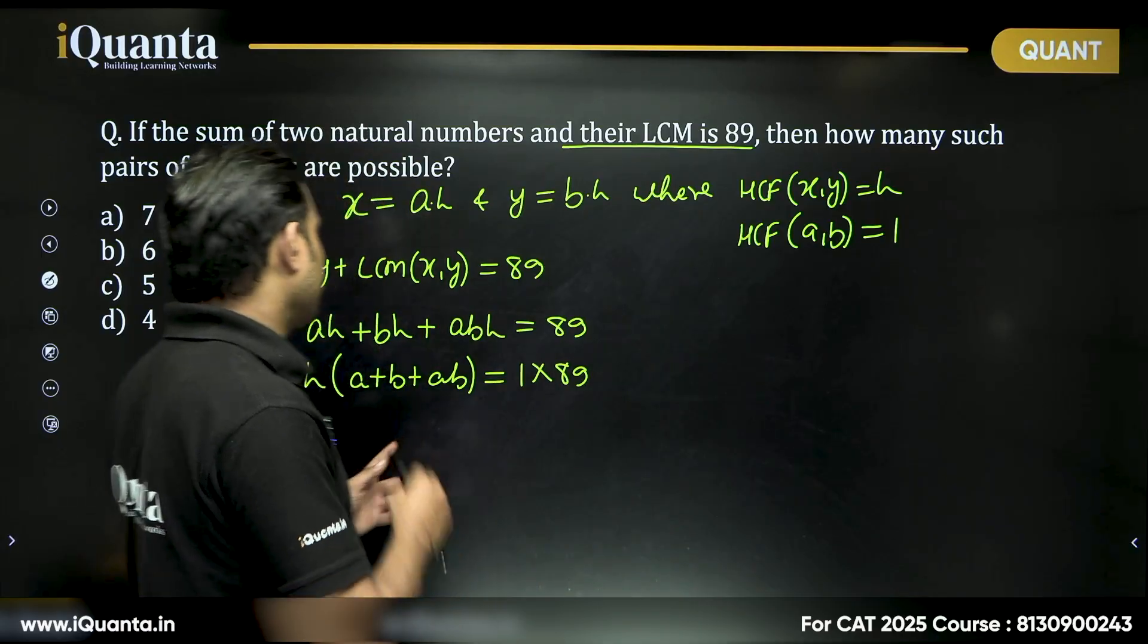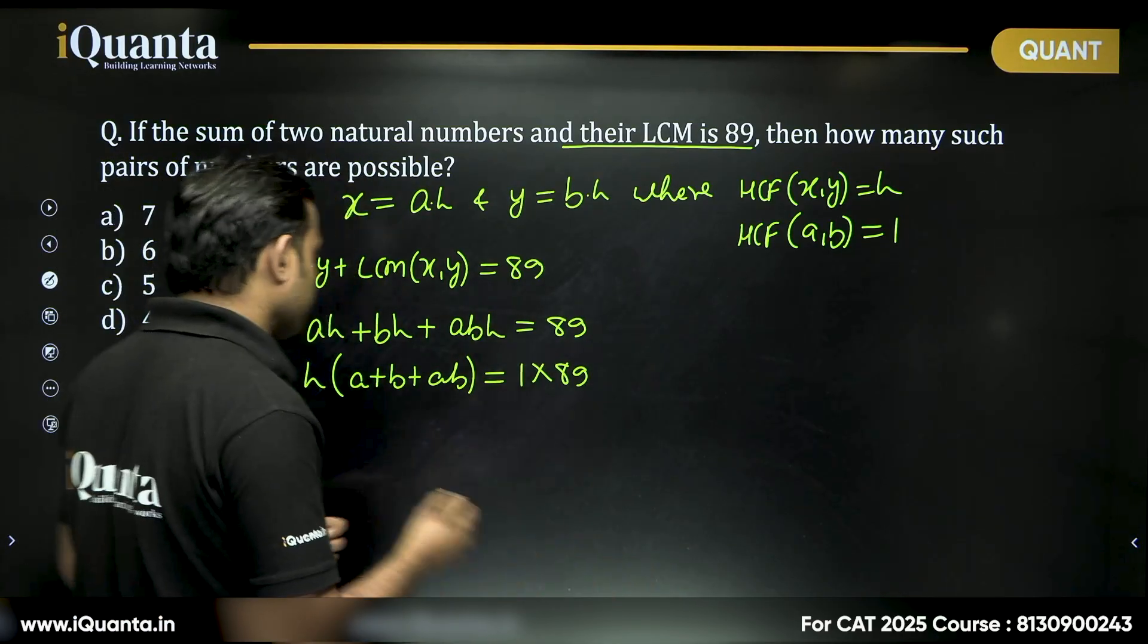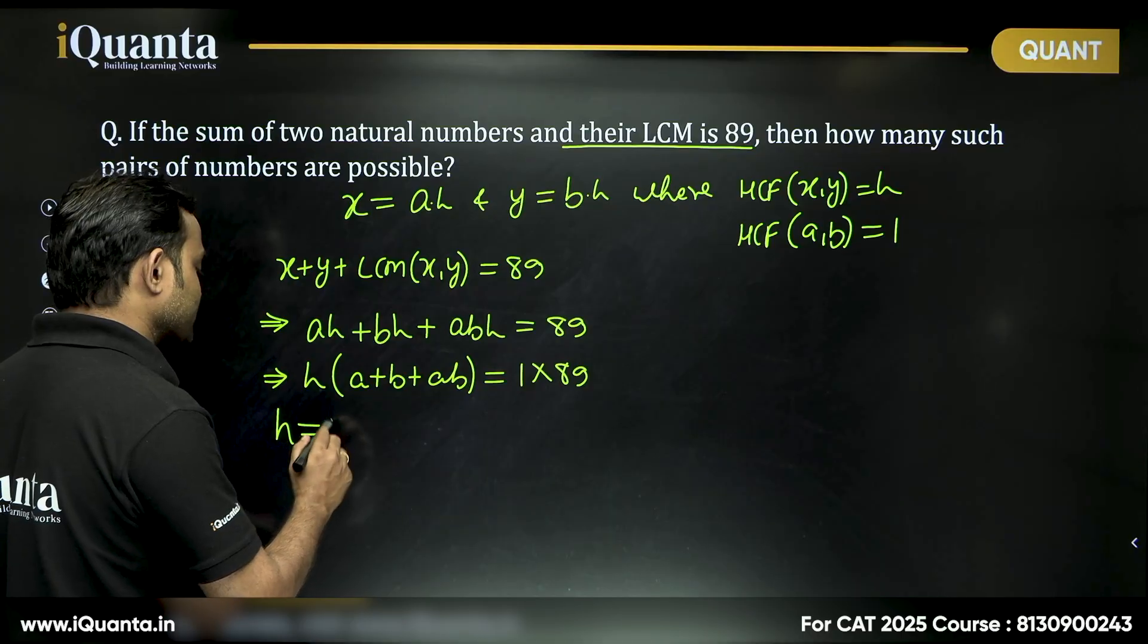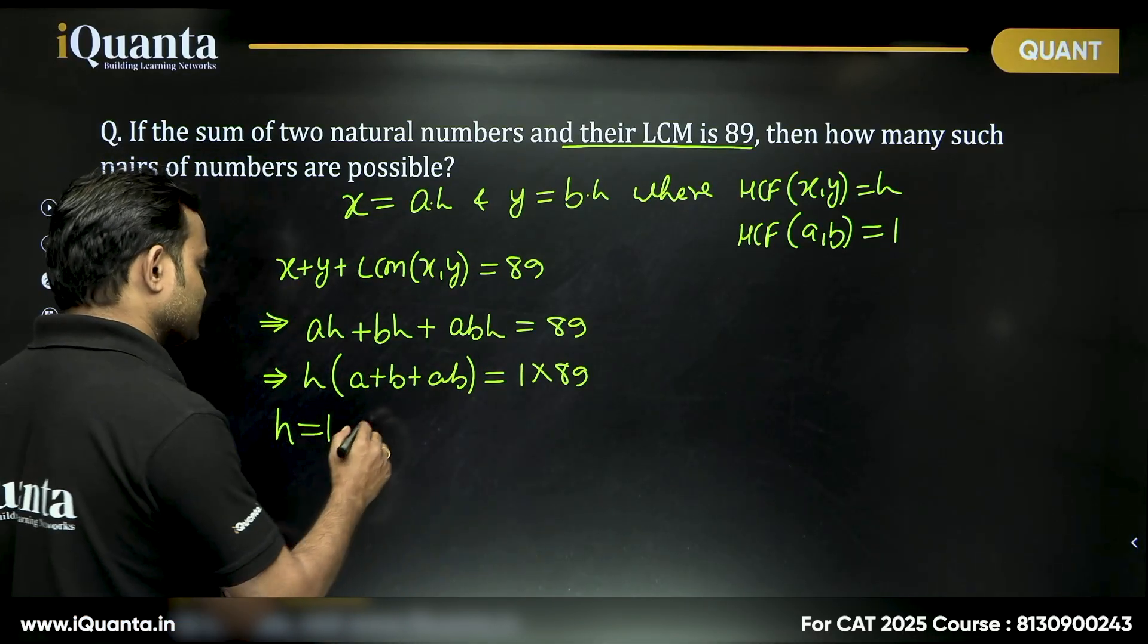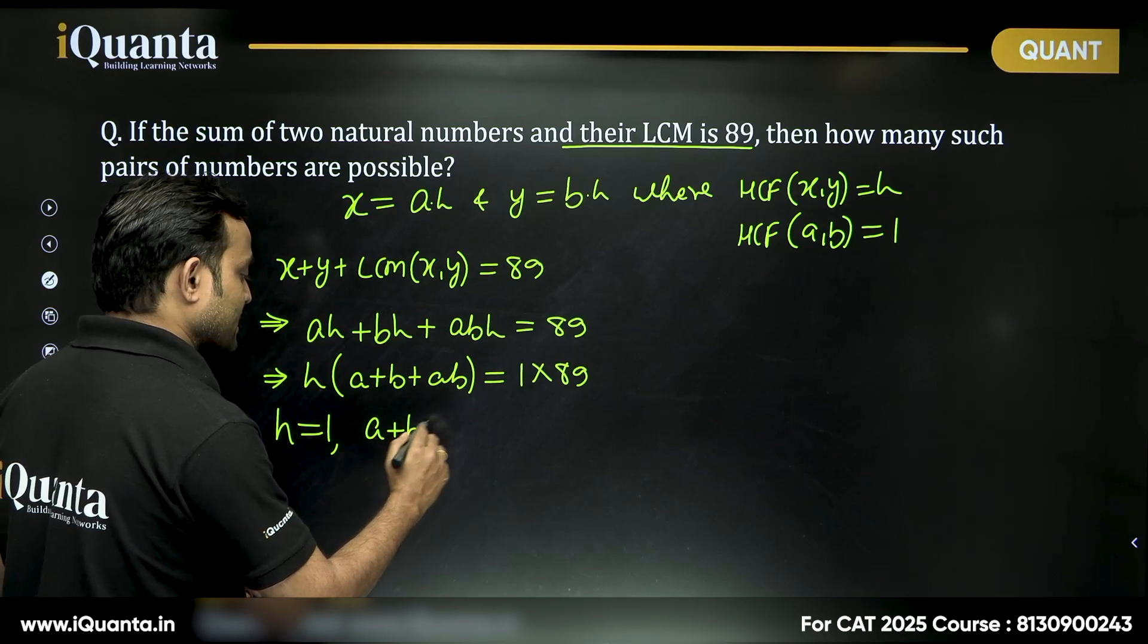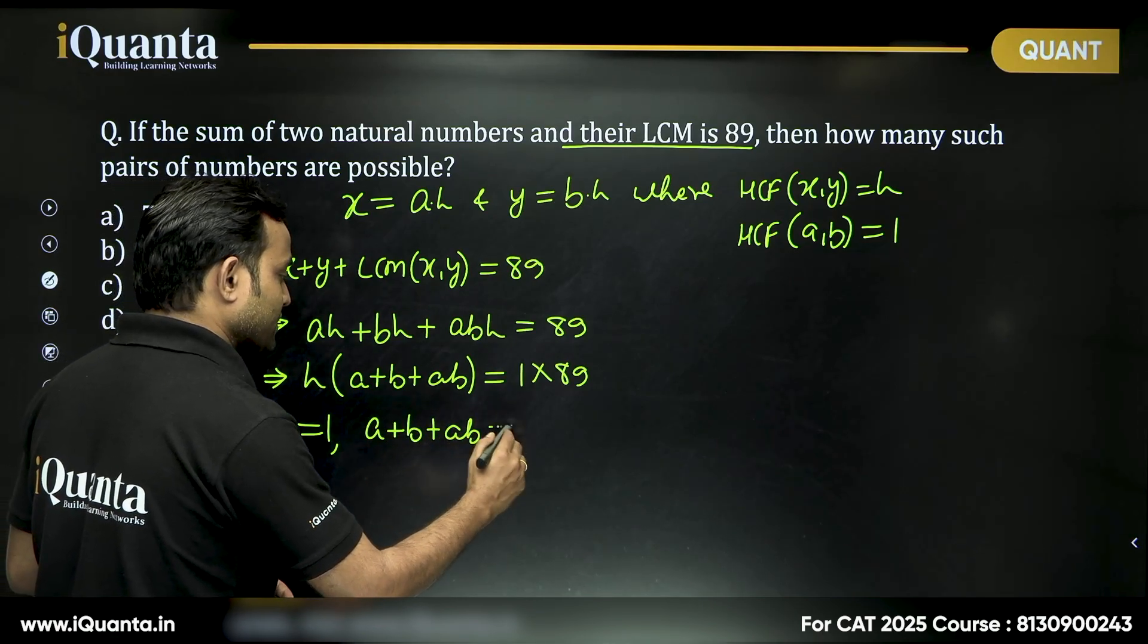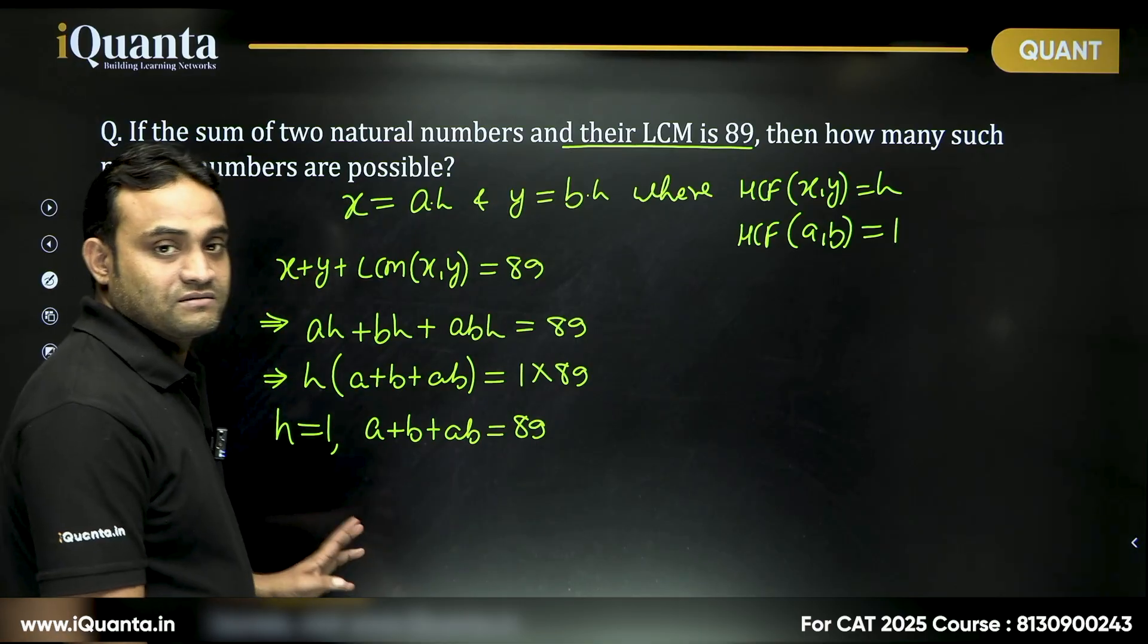Even if I take 1, 1, 1, it must be at least 3. That means H, the HCF of these two numbers, must be 1. HCF of these two numbers must be 1. Can I say A plus B plus AB will equal 89?